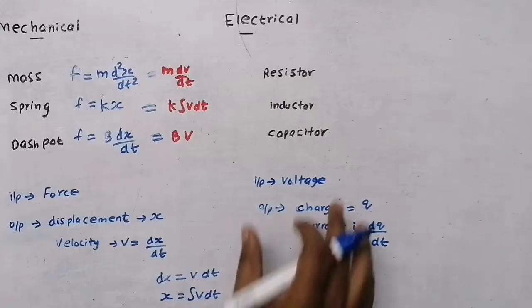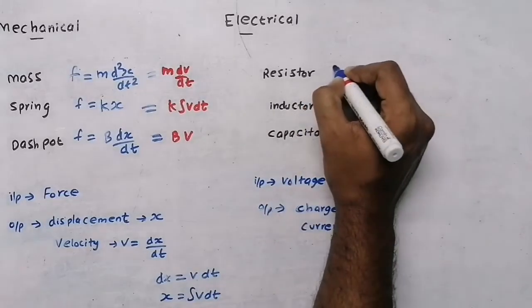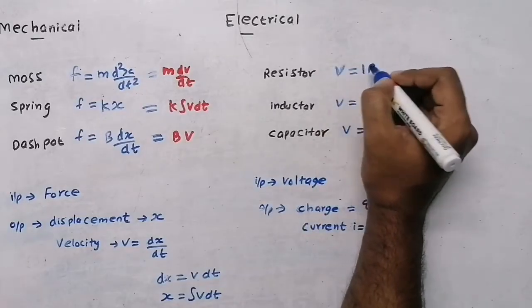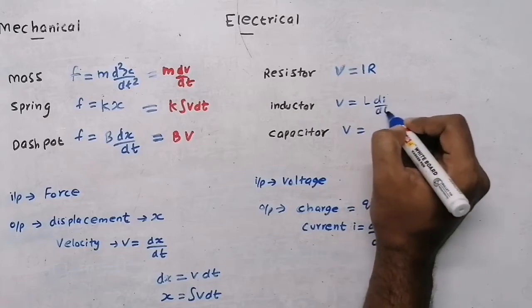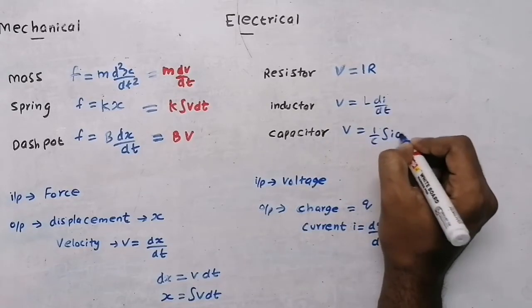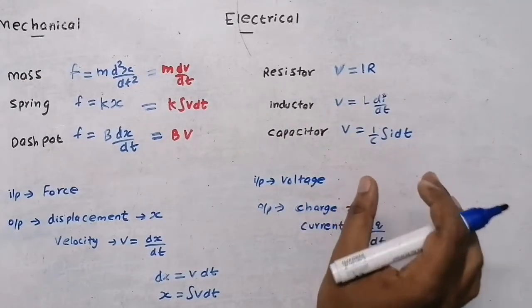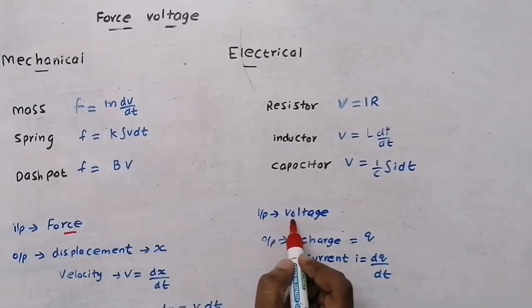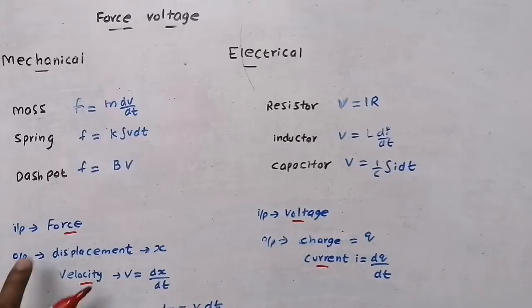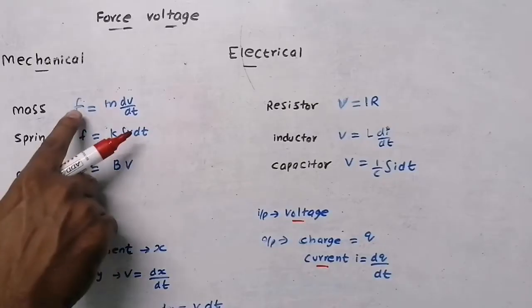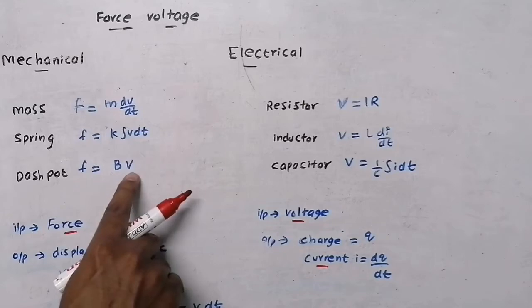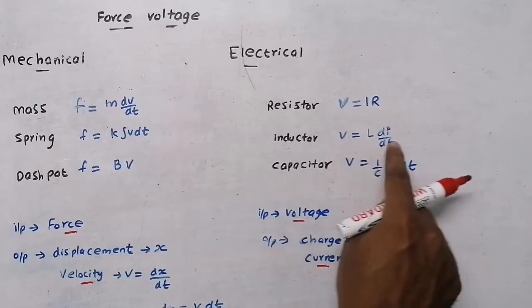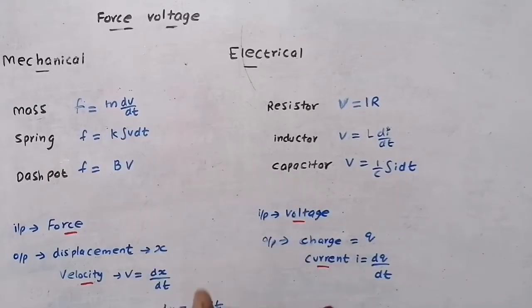In the electrical system with voltage as input, the voltage equations are: for resistor V = iR, for inductor V = L·(di/dt), and for capacitor V = (1/C)·∫i dt. In mechanical system: input is force, output in terms of velocity. In electrical system: input is voltage, output in terms of current. We now compare these two sets of equations.